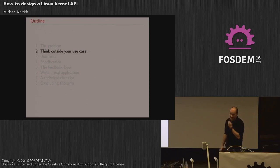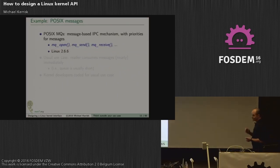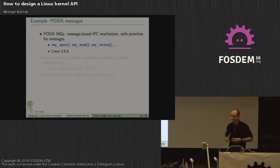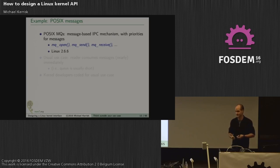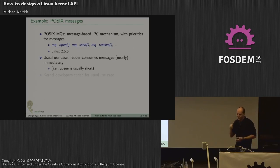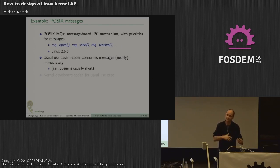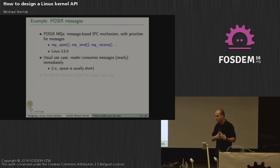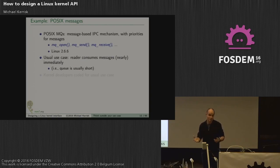One of the first things I want to say about designing APIs is that when you're a designer, you really need to start thinking a lot more outside your use case. One of my favorite examples is POSIX message queues — a message-passing IPC mechanism in the kernel. You can queue up messages, and the messages have priorities; higher-priority messages get delivered sooner. The usual use case is a reader sitting around, always reading incoming messages, so there's never many messages in the queue — perhaps zero or just one.